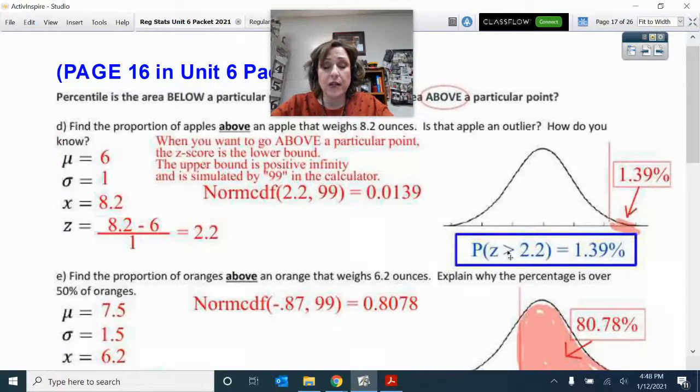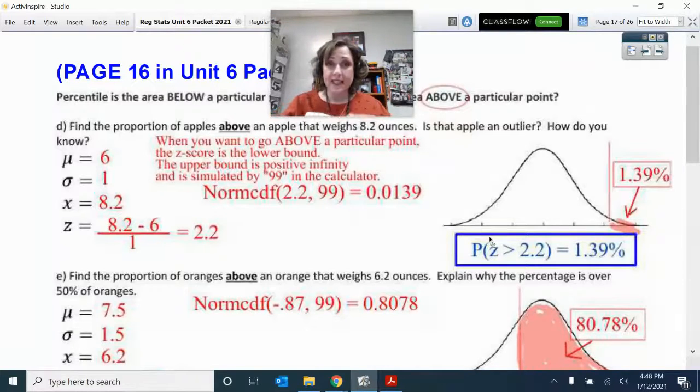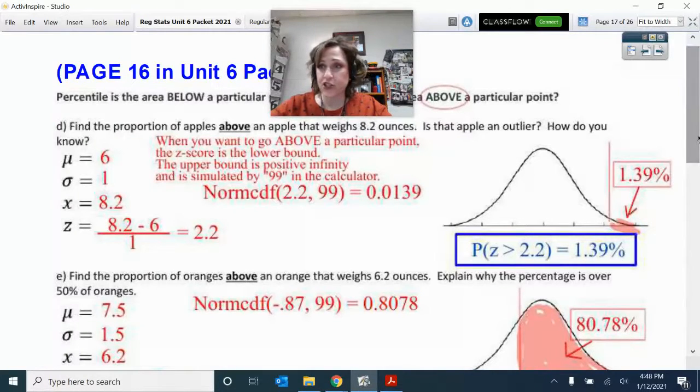I know some of you struggle with inequalities. This inequality is pointing to the direction you want your area to go. We want our Z's to be greater than 2.2. This is the way we want to put our final notation, and then we put that equal to the percent. That's how a final answer should look.